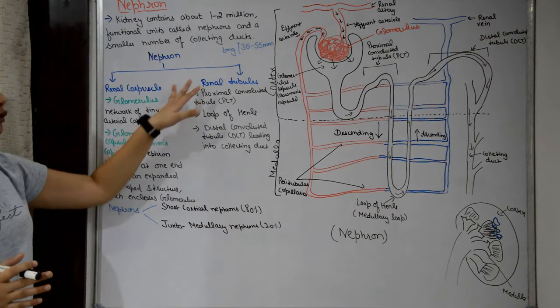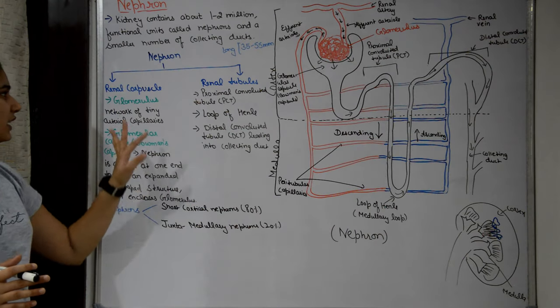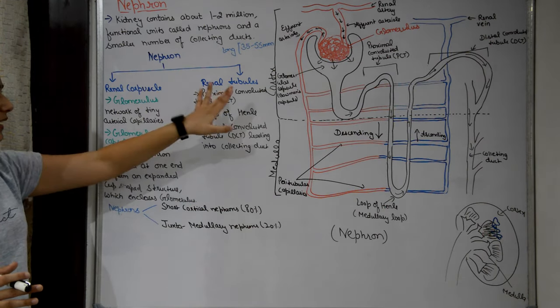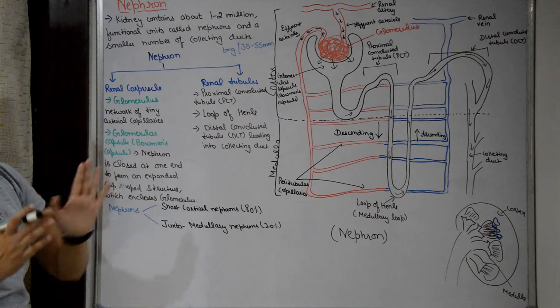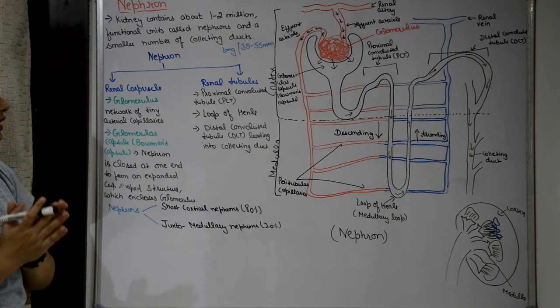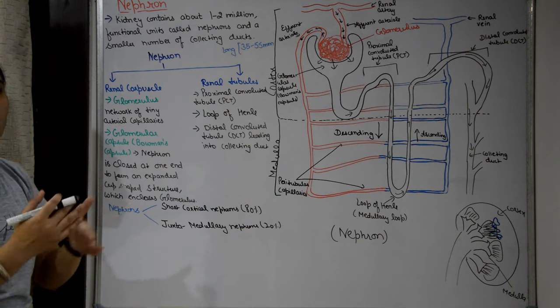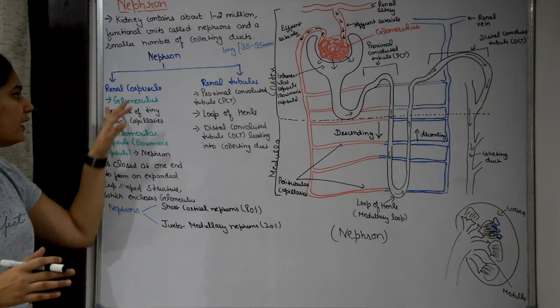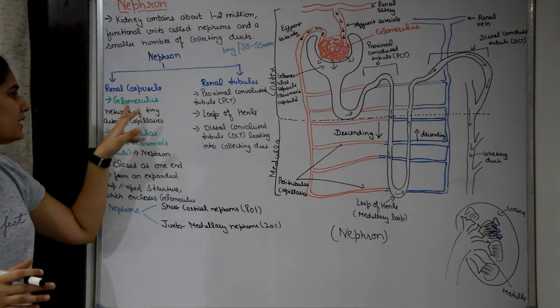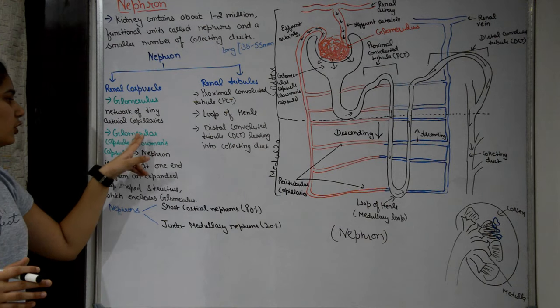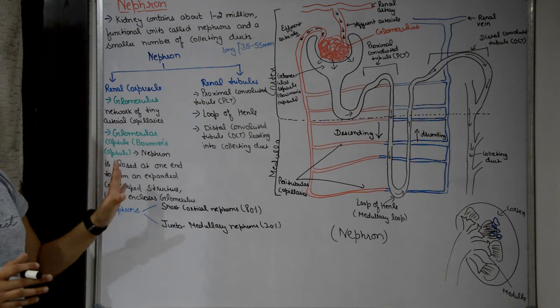There are two main parts of a nephron. The first is the renal corpuscle and the second is the renal tubules. The renal corpuscle consists of the glomerulus and the glomerular capsule.